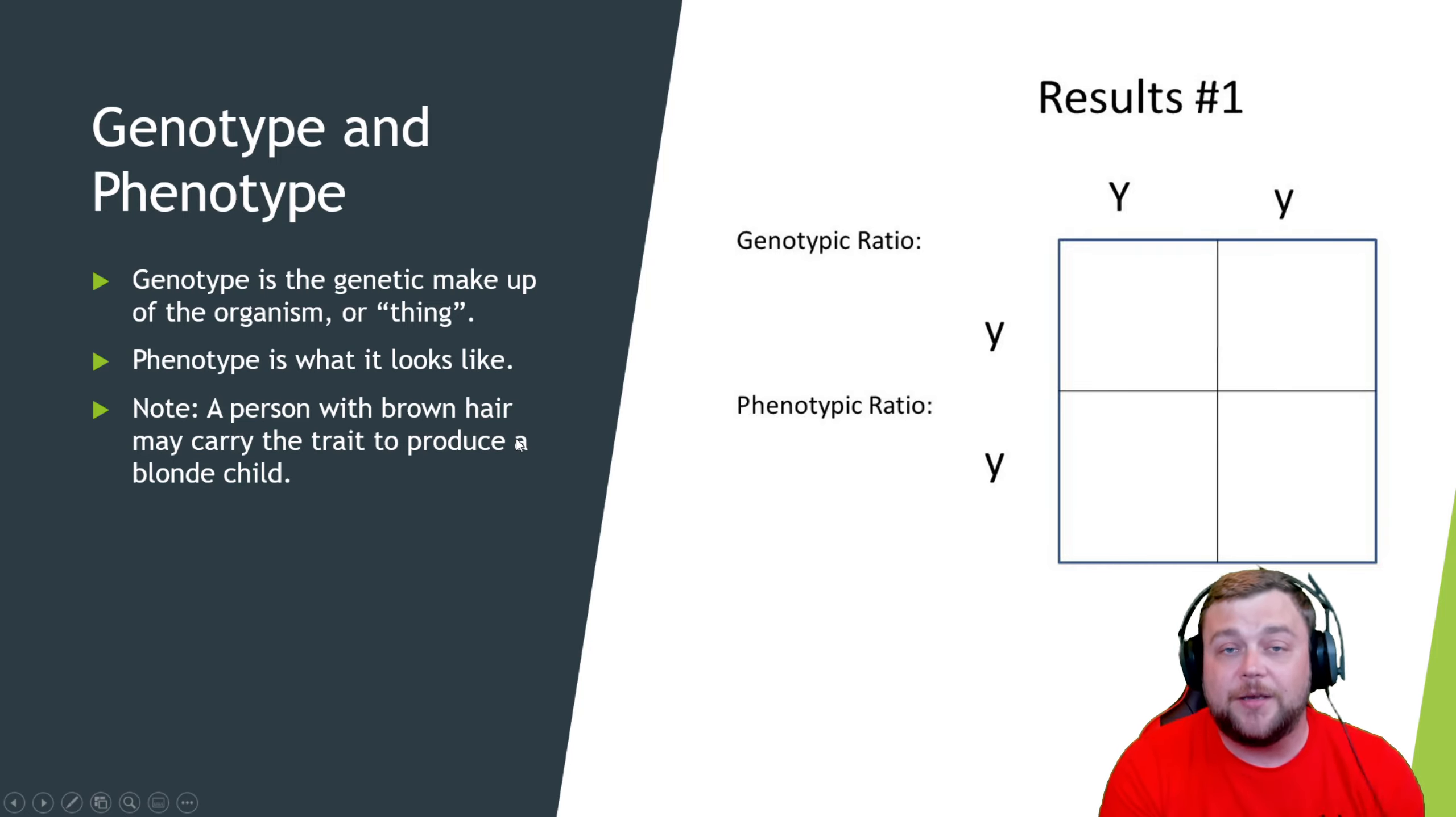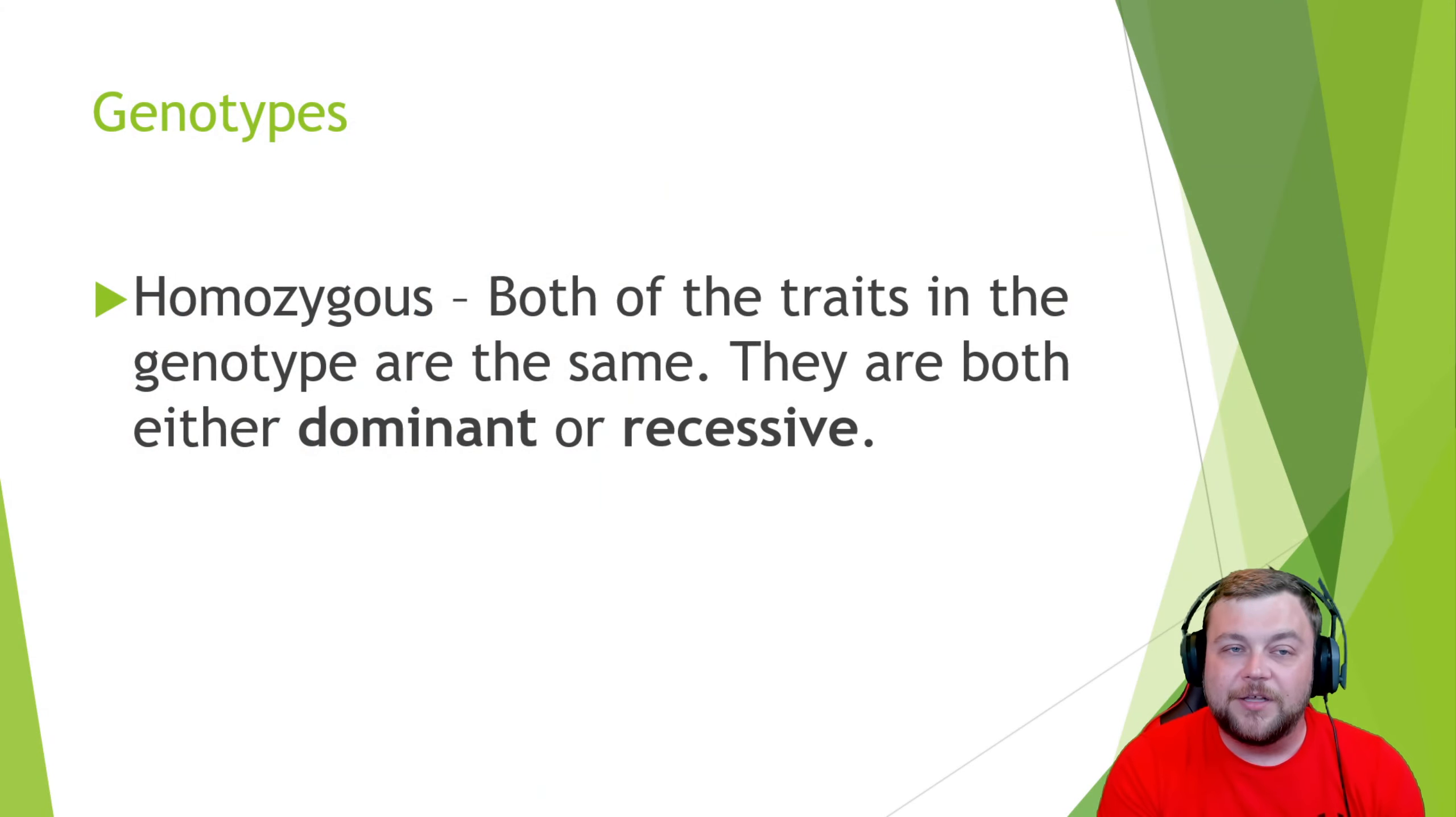Phenotype is what they look like. You might be a carrier for a recessive gene. If one of your parents has brown eyes and the other parent has blue eyes, you yourself might be a carrier for blue eyes. There is a chance. If you end up having kids and one of them has blue eyes, there's a good chance that you were a carrier for the recessive trait for blue eyes.